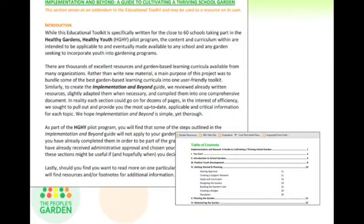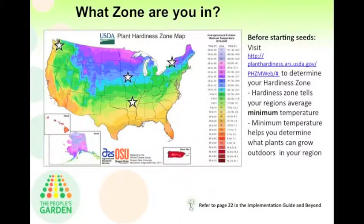If you haven't yet downloaded this guide, you'll want to go ahead and do so. Today, we'll be talking very briefly on page 22. On page 22 in that guide, you will see some information about the USDA Plant Hardiness Zone map. It looks a little complicated at first, but it's quite a simple map where you can input your region, city or town, and you'll get a specific number about the zone you're in. That zone helps you determine your region's average minimum temperature, which is just helpful information to know when you start gardening.